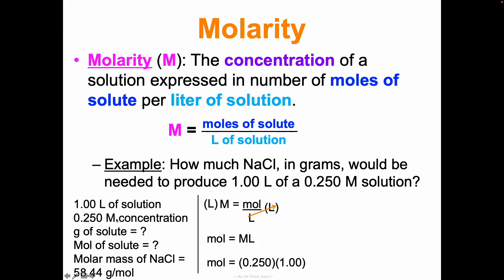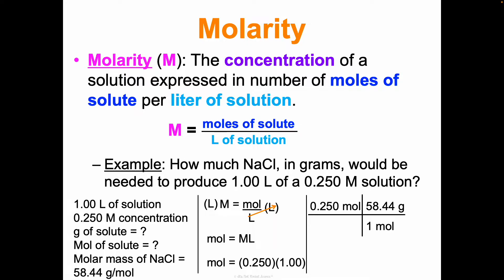I plug in: molarity is 0.250 times liters which is 1 liter, giving 0.250 moles. But they asked for grams, so I need to do a unit conversion. Drawing my picket fence: 58.44 grams per one mole. I put one mole on the bottom and 58.44 grams on the top so units cancel. Multiplying across: 0.250 times 58.44 divided by 1 gives 14.6 grams of sodium chloride.